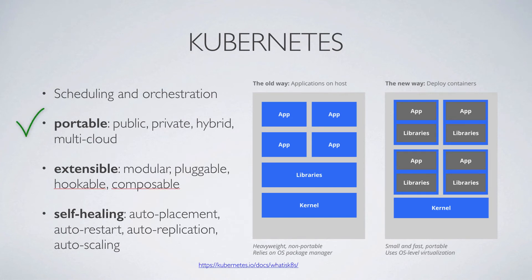Kubernetes in particular is very portable — it has broad adoption both in the public and private cloud space. It's extensible, and one of the most compelling features of Kubernetes is that it is self-healing. So it automatically decides where to place workloads, and it can automatically restart, replicate, and even scale workloads.